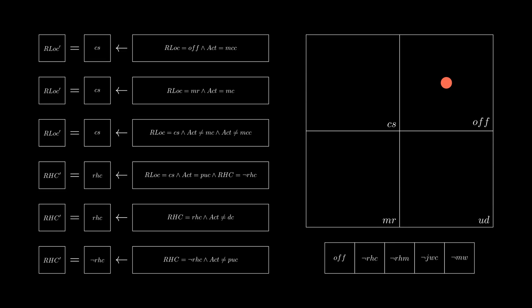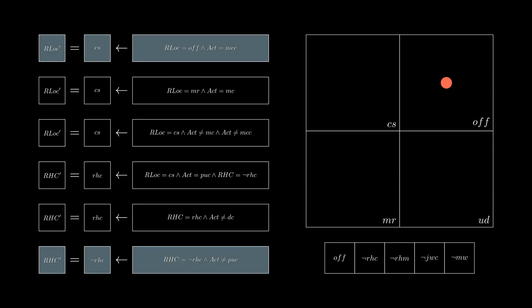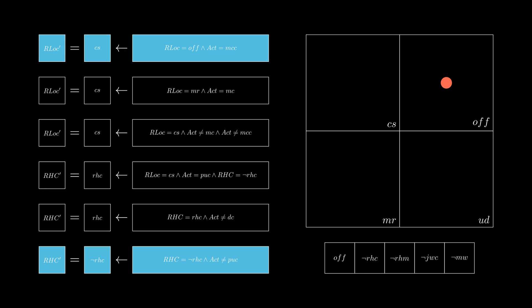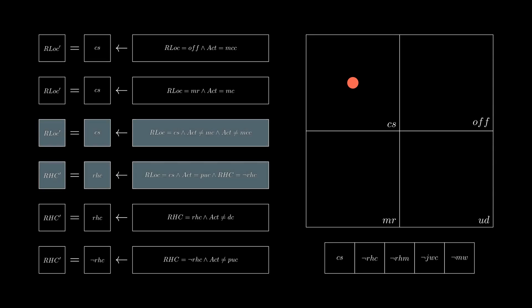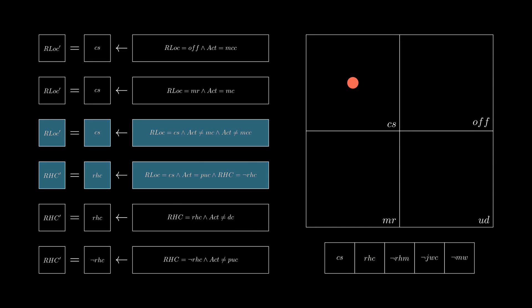Using the previous example, there are two rules that match the current state. The first is a causal rule, and the second is a frame rule. The robot updates its location to the coffee shop, but retains it not having coffee. Then, there are two more rules that match, where it keeps its location in the coffee shop, and updates it having coffee.